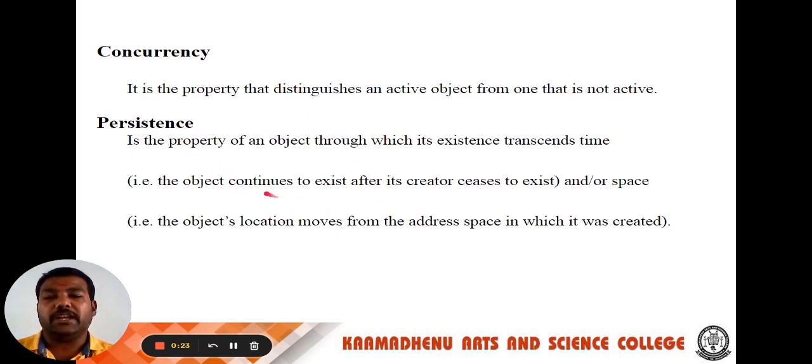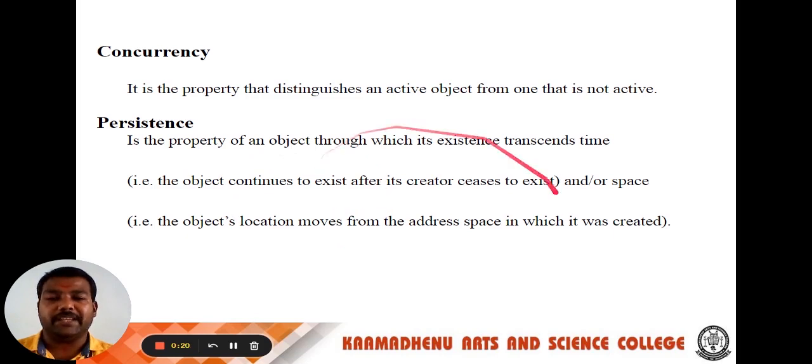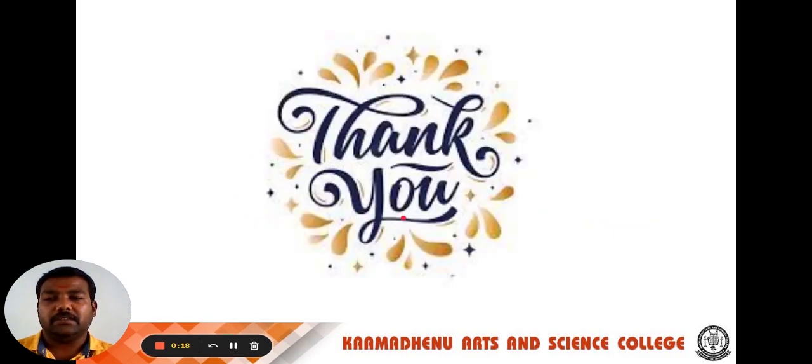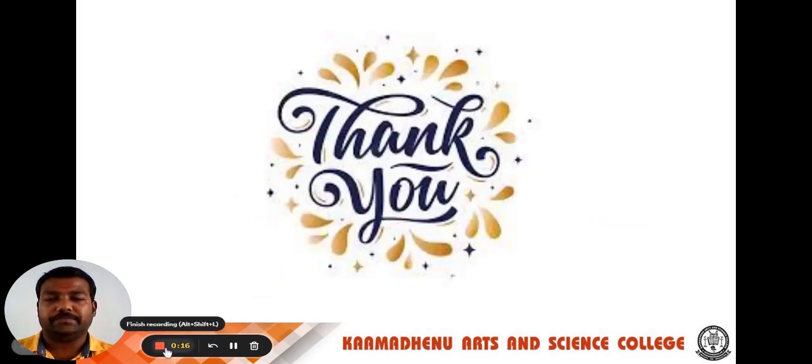In total, there are three minor elements and four major elements of the object model. Thank you.